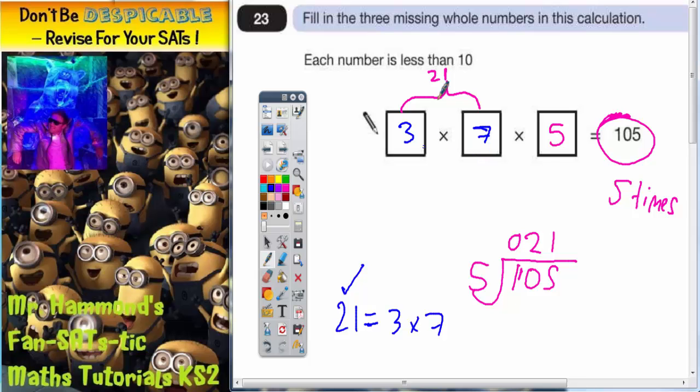And is 21 times 5 105? Let's have a look. 21 times 5. 5 times 1 is 5. 5 times 2 is 10. It is indeed 105. So these three numbers seem to work.